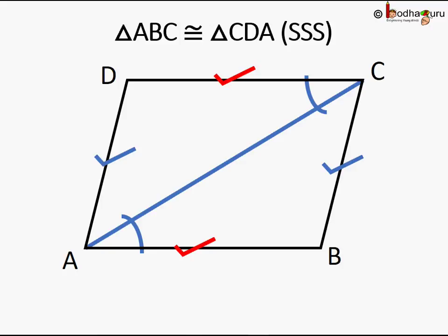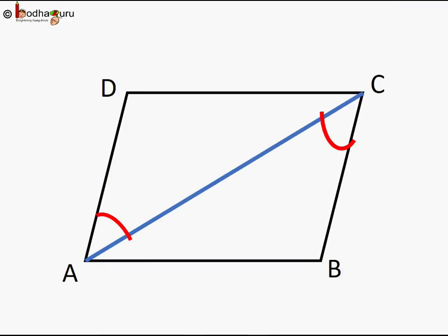Since the triangles are congruent, angle CAB equals angle ACD as they are corresponding angles of the congruent triangles. But they are also alternate angles — AC intersects lines AB and DC — and since alternate angles are equal, BC is parallel to AD.